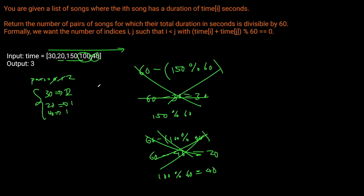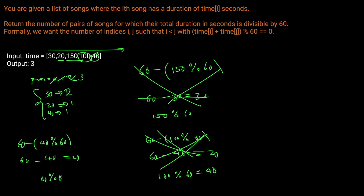Finally, 40: not immediately divisible by 60. We check for 60 minus (40 modulo 60), which is 60 minus 40 equals 20. We have one 20 in the dictionary, so we increment pairs once more. We then add 40 to the dictionary. We're at the end of the array, so we simply return pairs, which is 3.